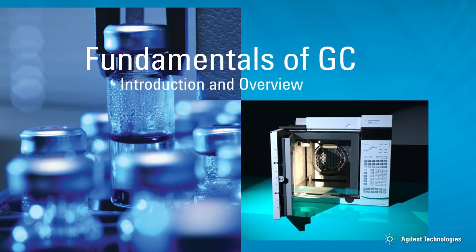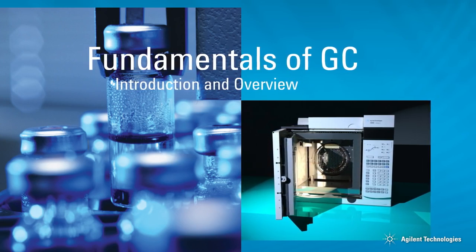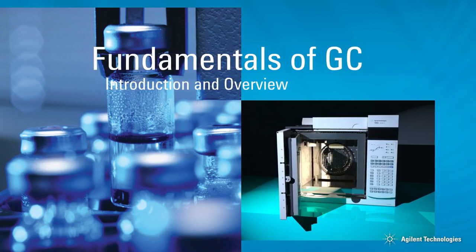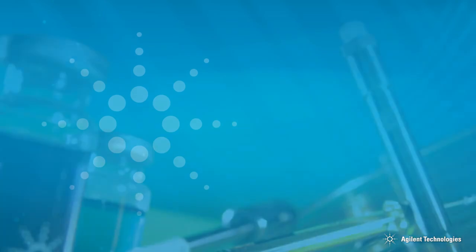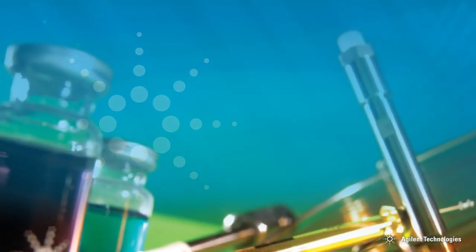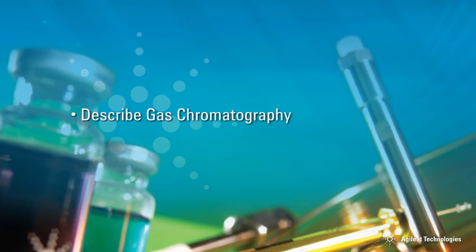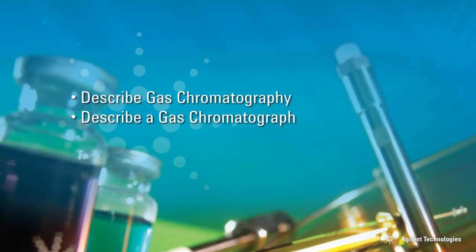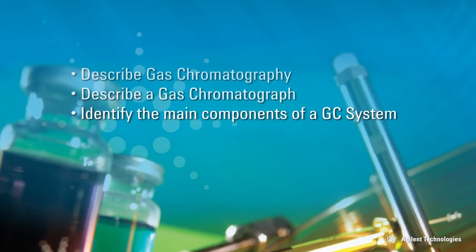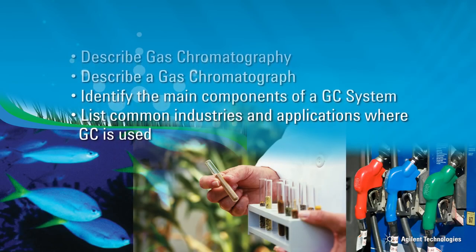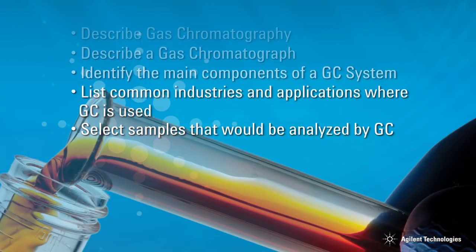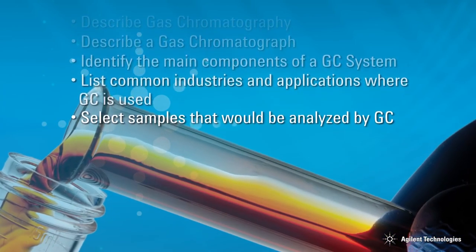GC samples must be able to be vaporized within the temperature limits of the GC heated zones, typically 400 degrees centigrade or less. Completion of this introductory training module on gas chromatography will prepare you to describe gas chromatography and a gas chromatograph, identify the main components of a GC system, list common industries and applications where GC is used, and select samples that would be analyzed by GC.